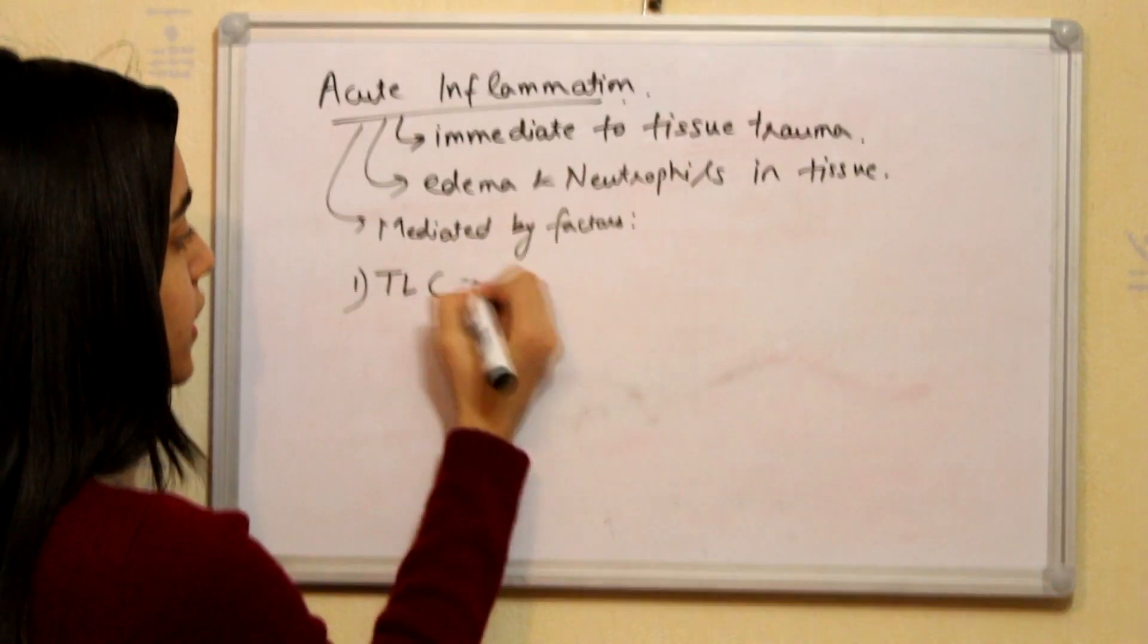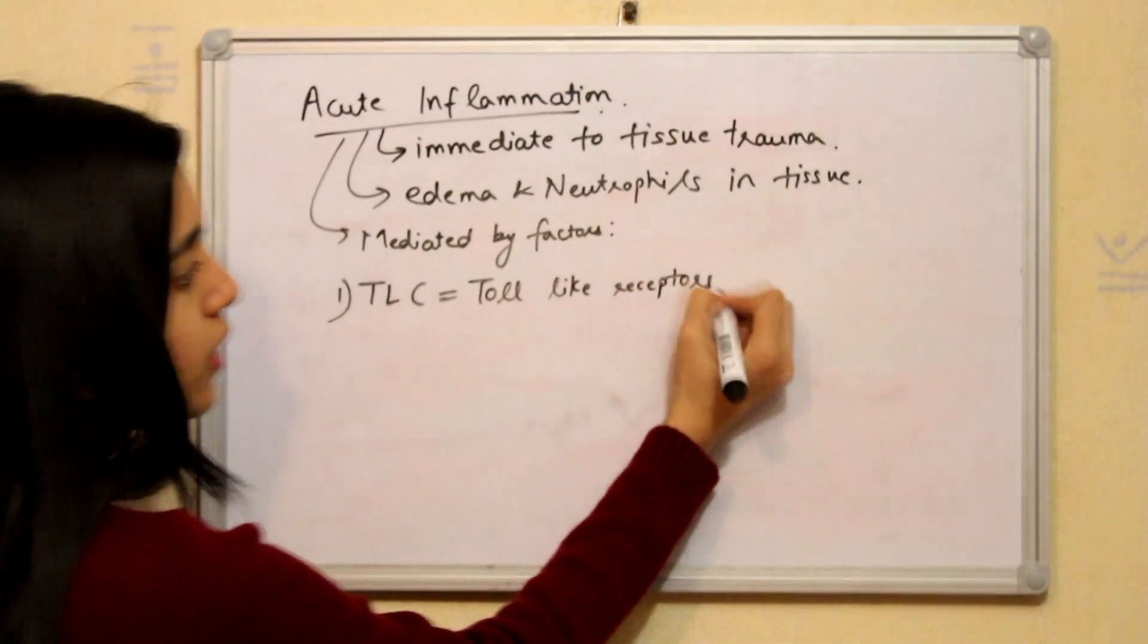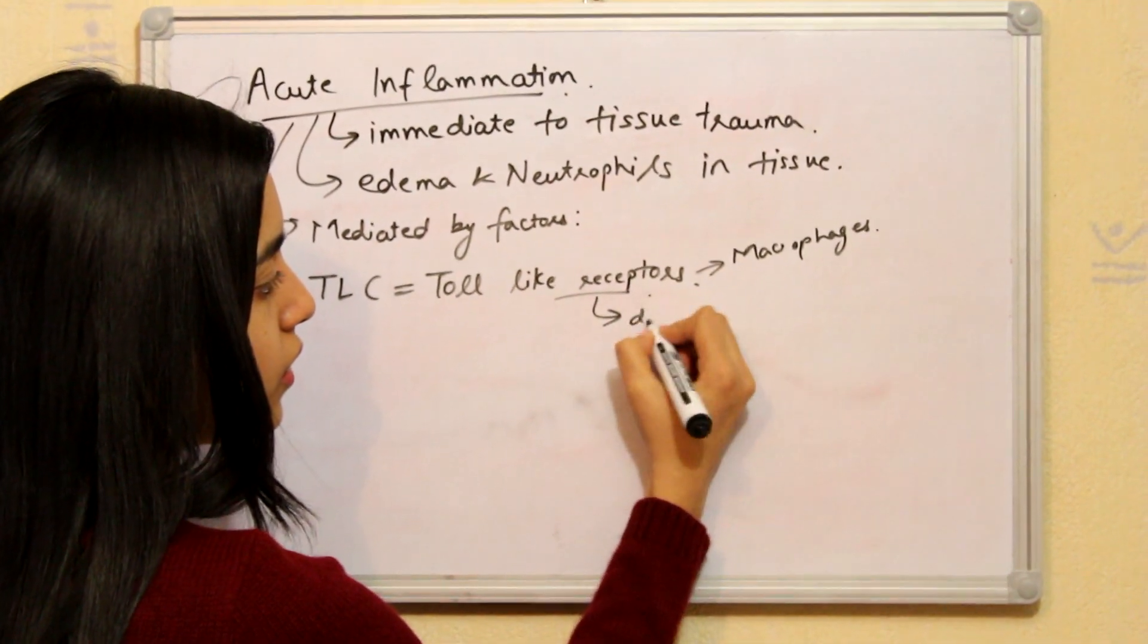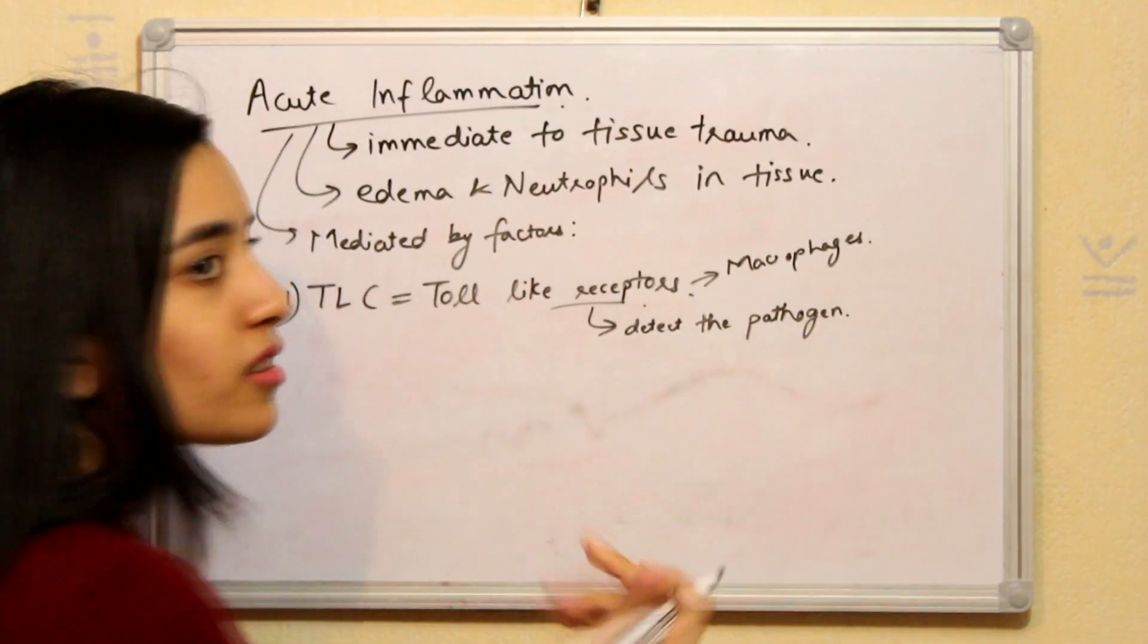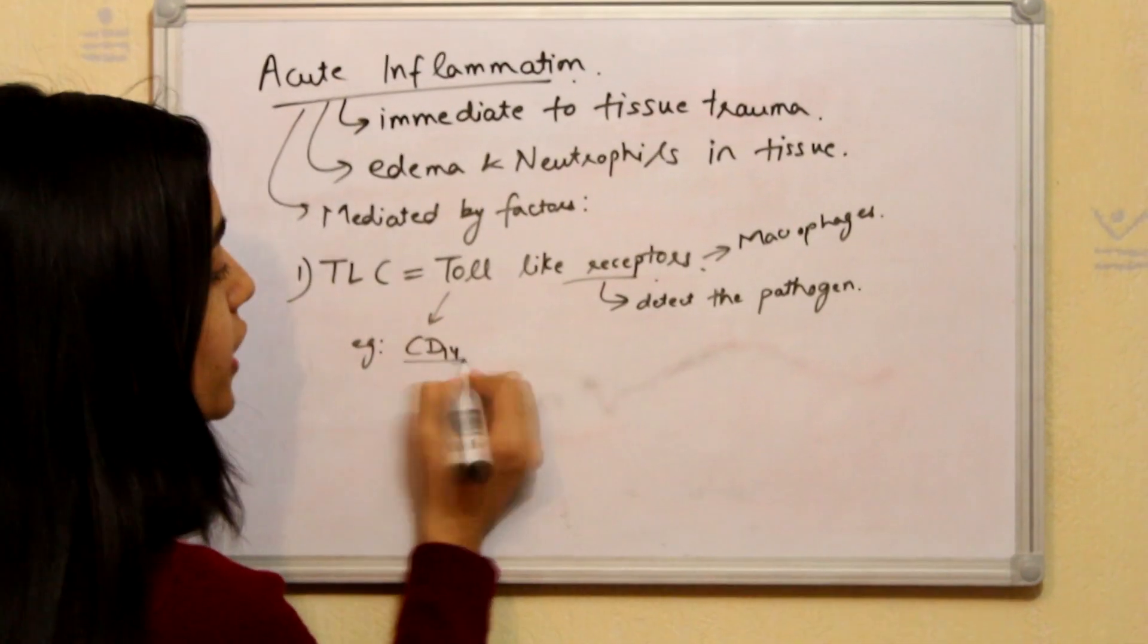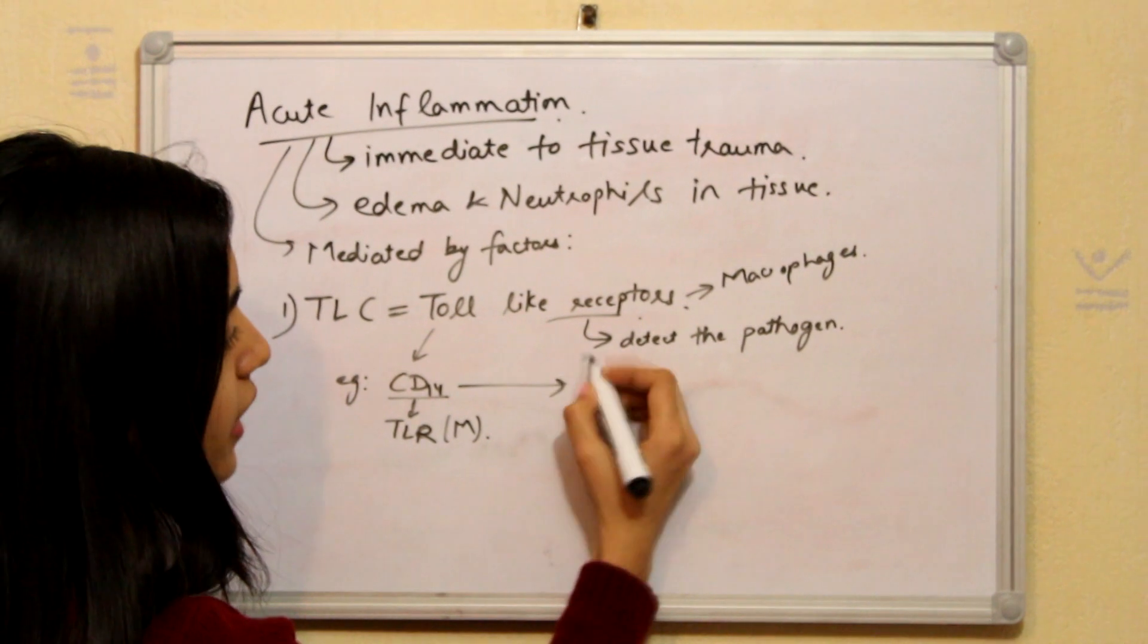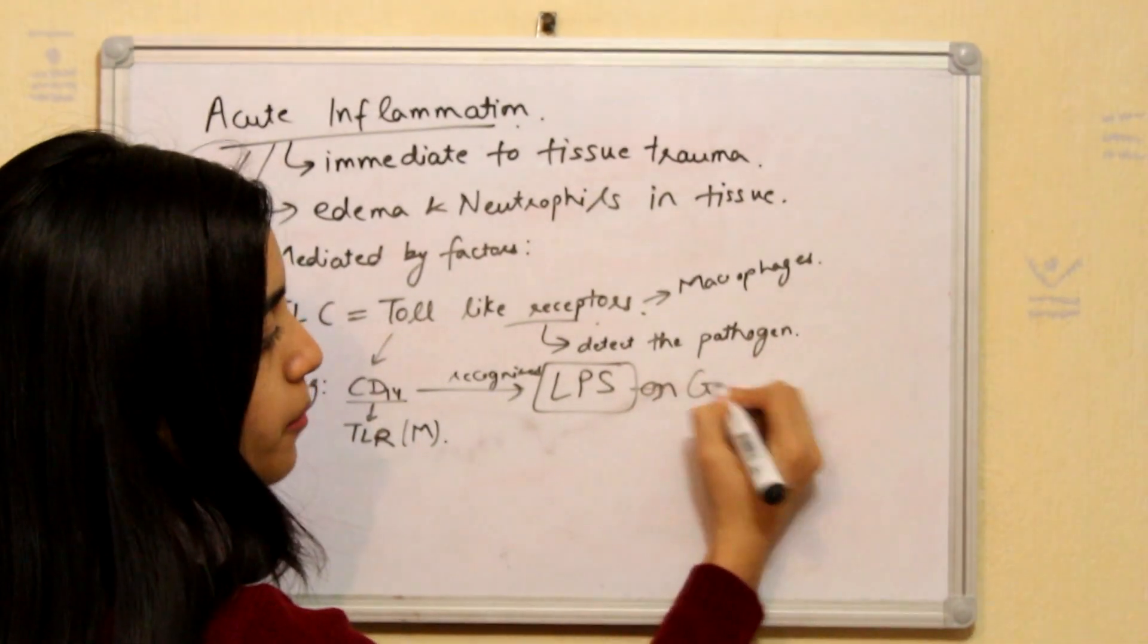First one is TLR which is Toll-like receptors. These receptors are present on the macrophages and these receptors detect the pathogens. Not actually pathogens but the patterns of the pathogens. I'll give you an example. Example is like CD14. CD14 is considered as TLR, Toll-like receptor and it is present on macrophage. It then recognizes the lipopolysaccharide which is present on gram negative bacteria.